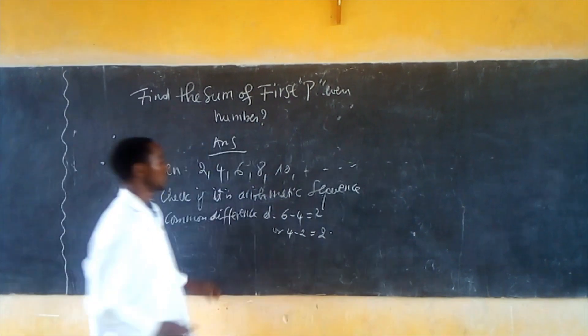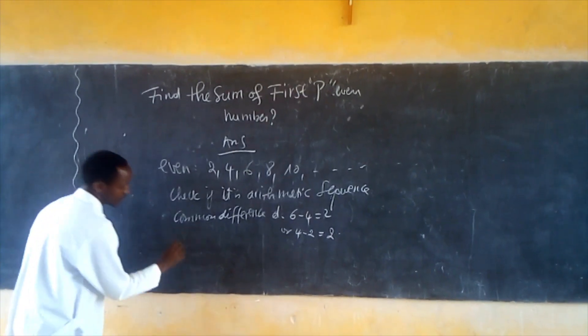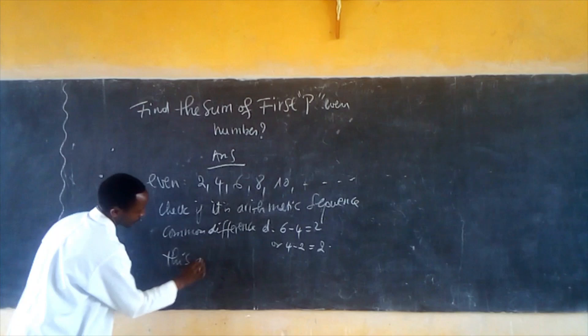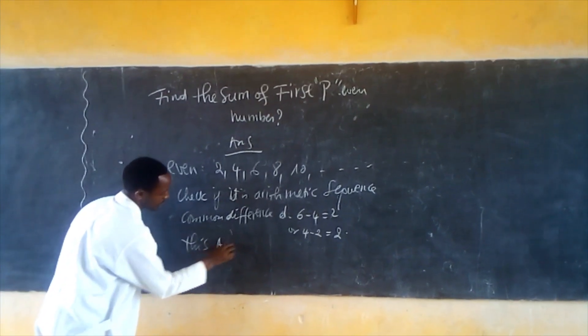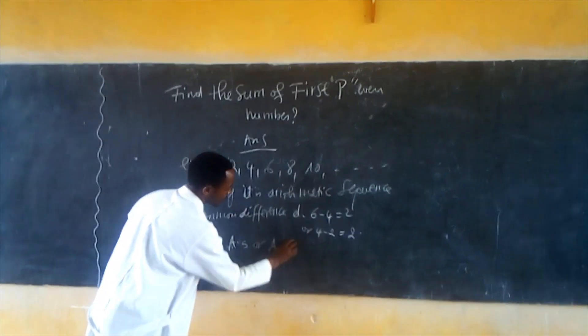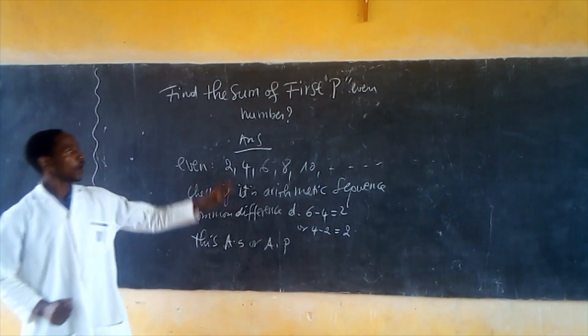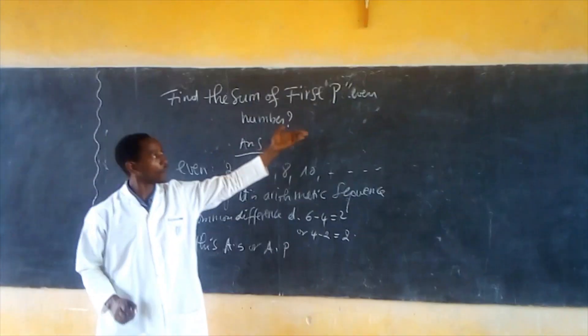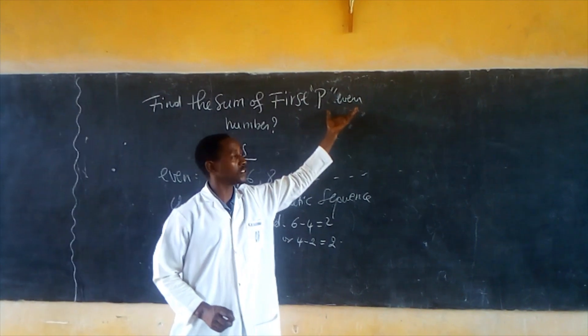So then you conclude that this is an arithmetic sequence or arithmetic progression. So how to find the sum of this arithmetic sequence?